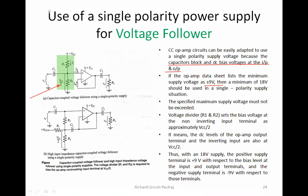The specified maximum supply voltage must not be exceeded. Whatever voltage is specified, only that should be used. For example, if it needs plus 9 volts and instead I give about 20 volts, I'm going to get plus 10 and minus 10, which should not be done. Whatever is specified should be followed.